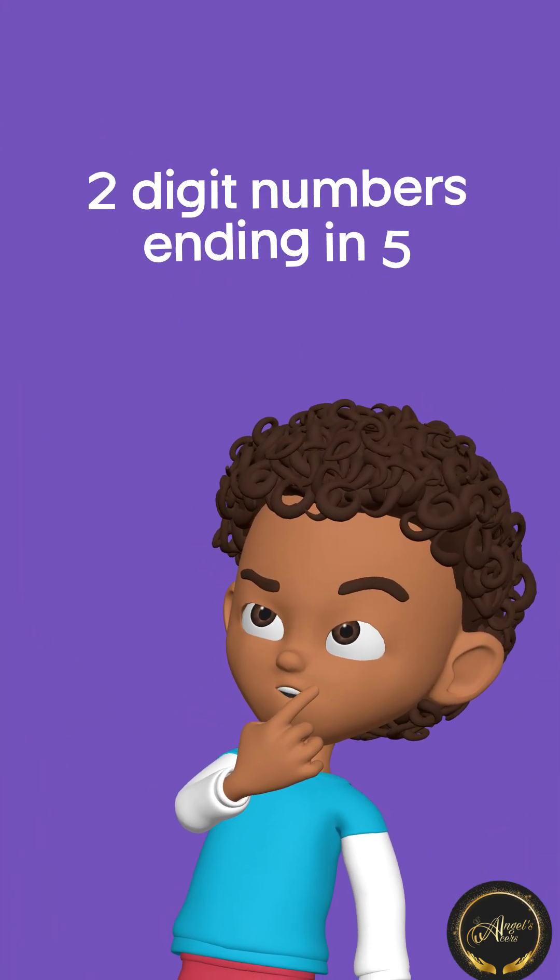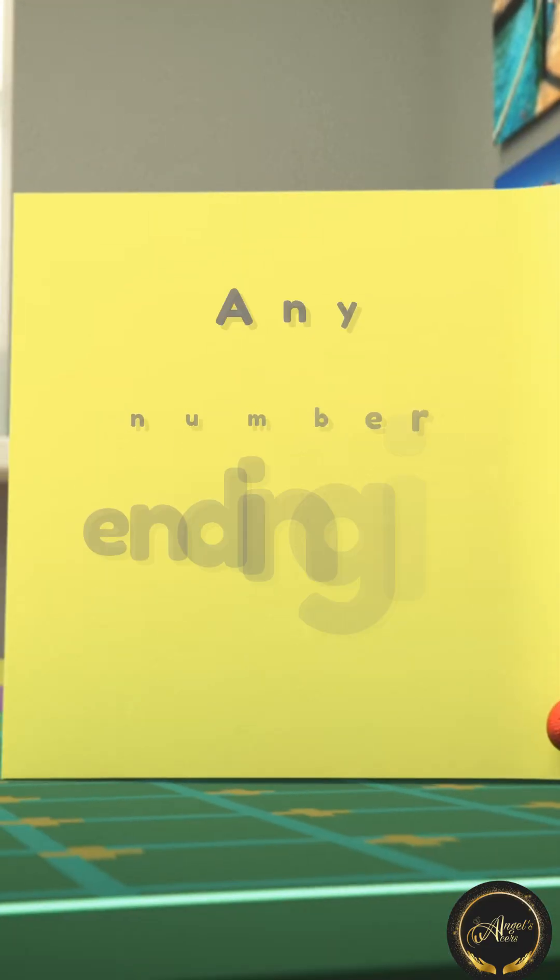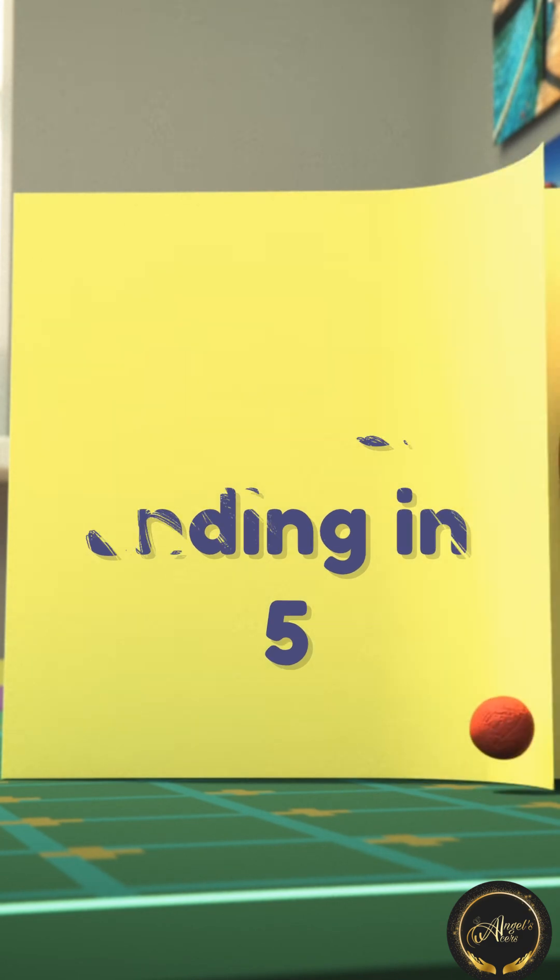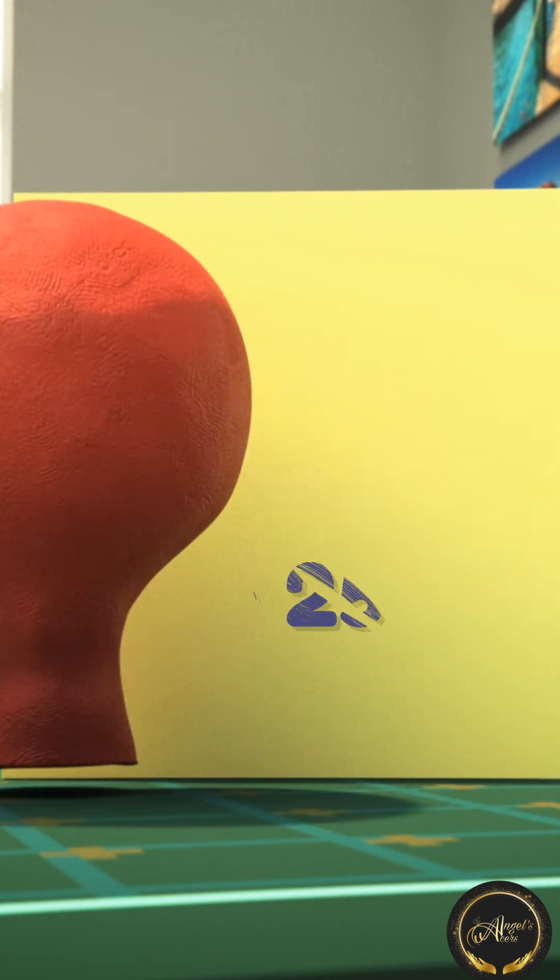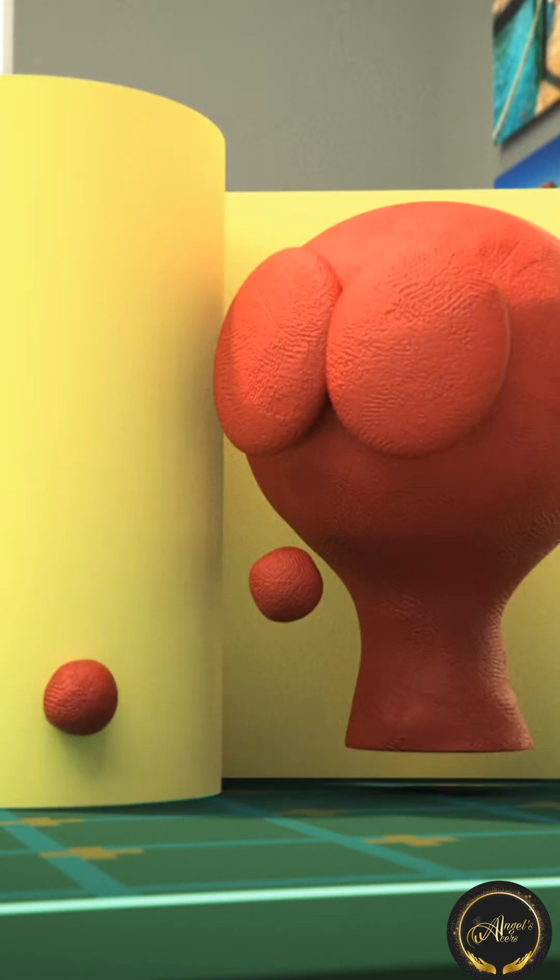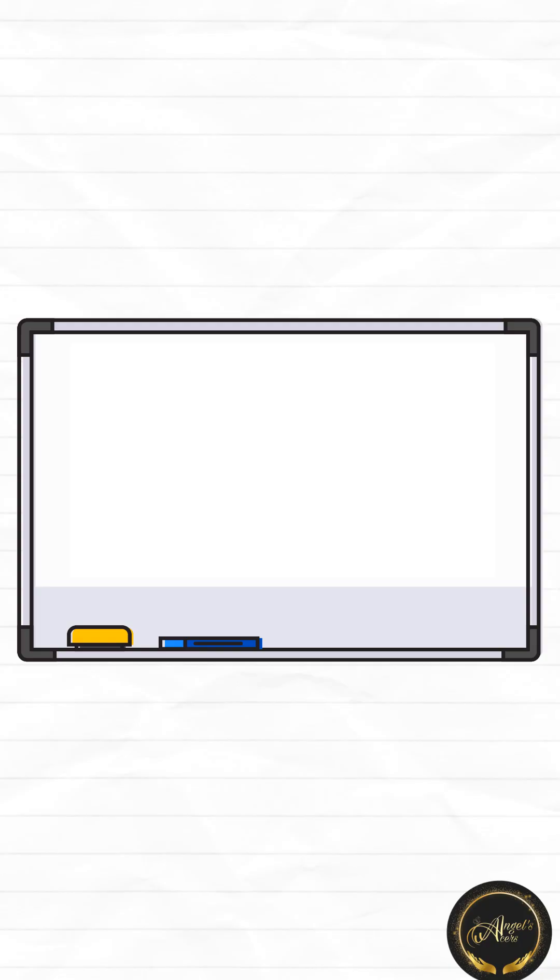Today let's learn how to square a two-digit number ending in 5. Here is the rule: when you square any number ending in 5, the answer will always end in 25. This is a universal rule. Go ahead, pause the video and check it for yourselves.